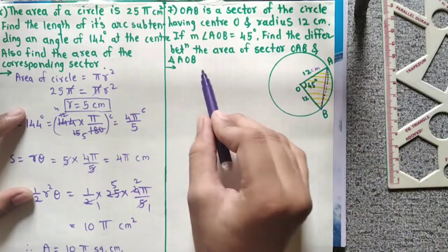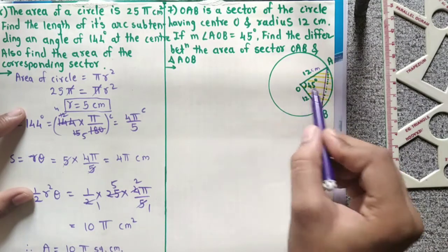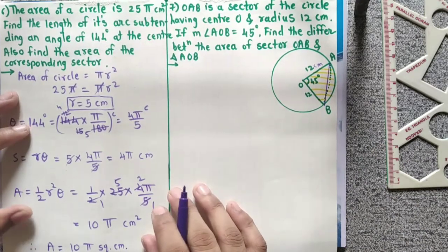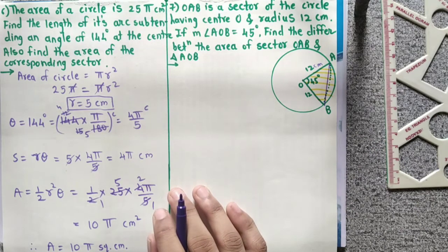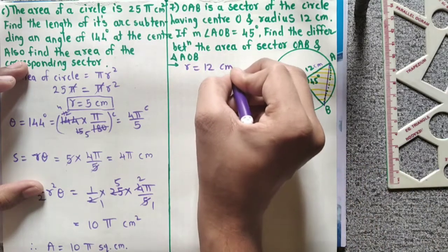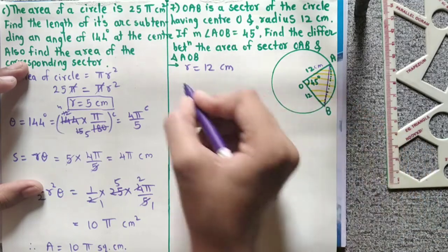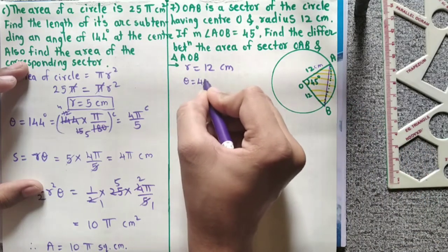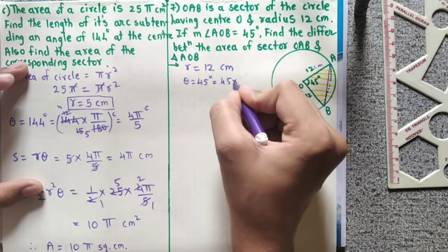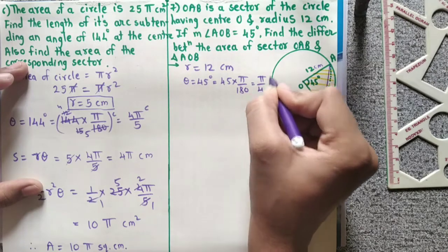We need to find the difference: area of sector OAB minus area of triangle AOB. Given: R is 12 cm. Theta is 45 degrees. We convert: 45 into pi upon 180 equals pi by 4 radian.